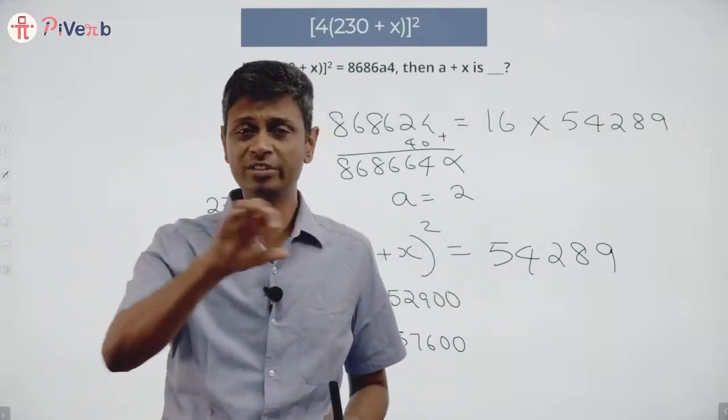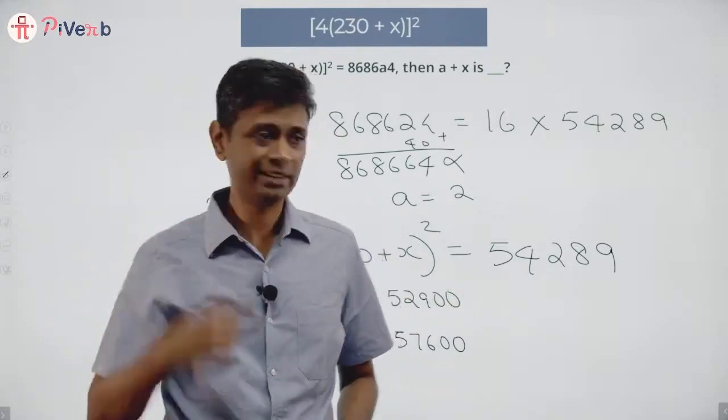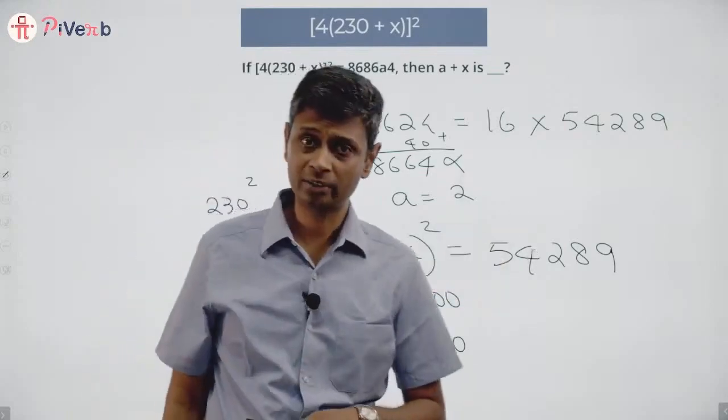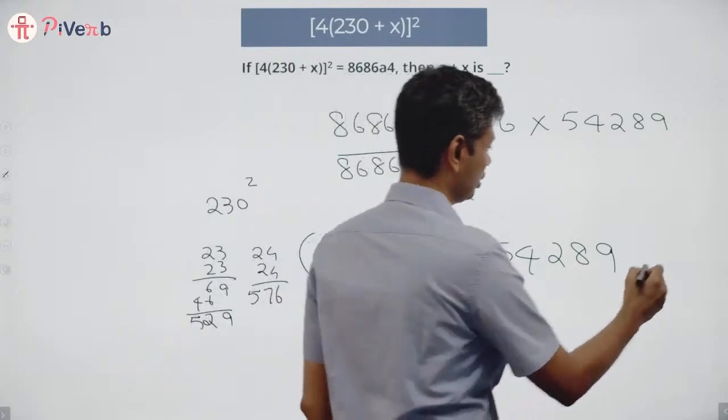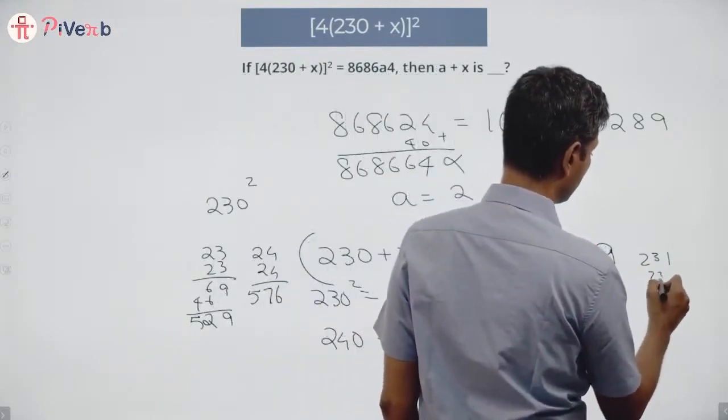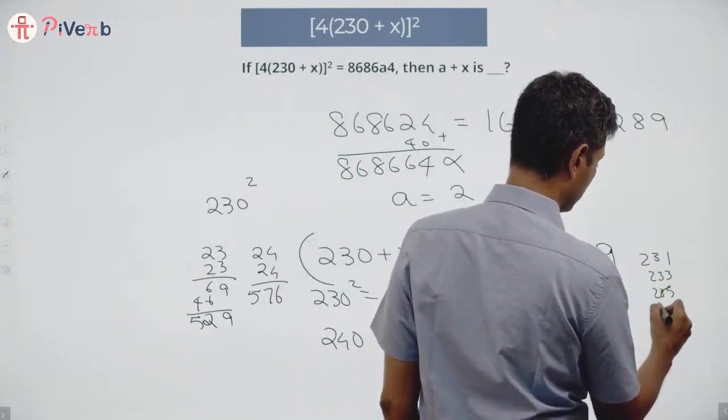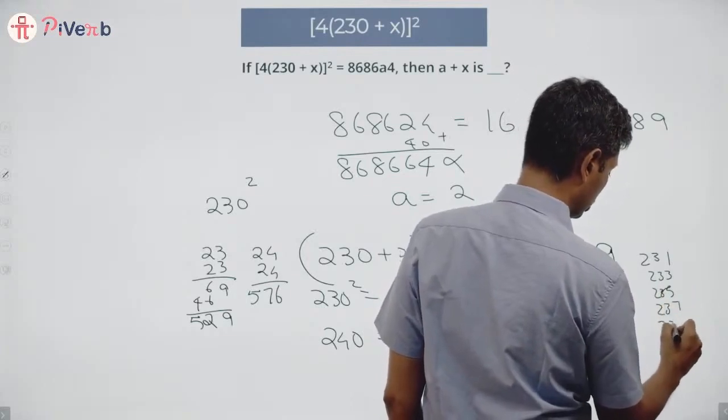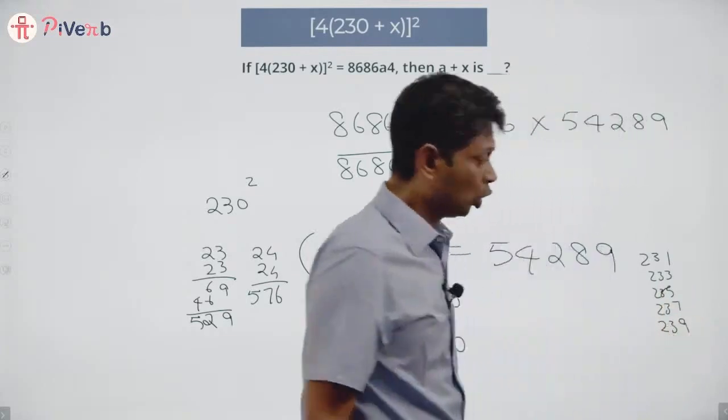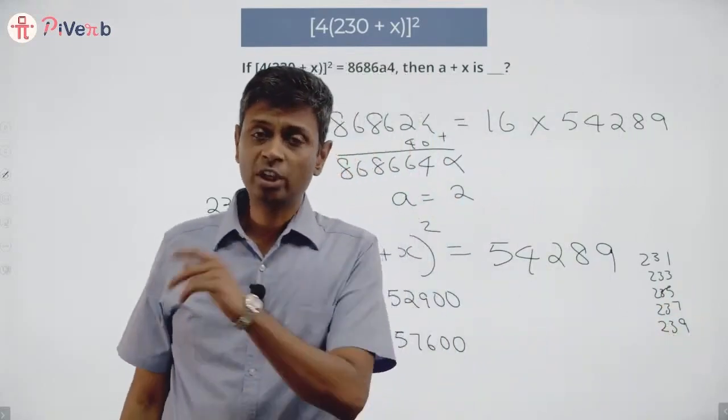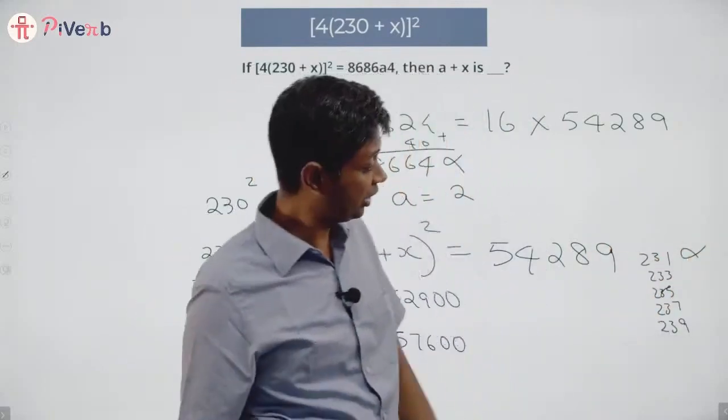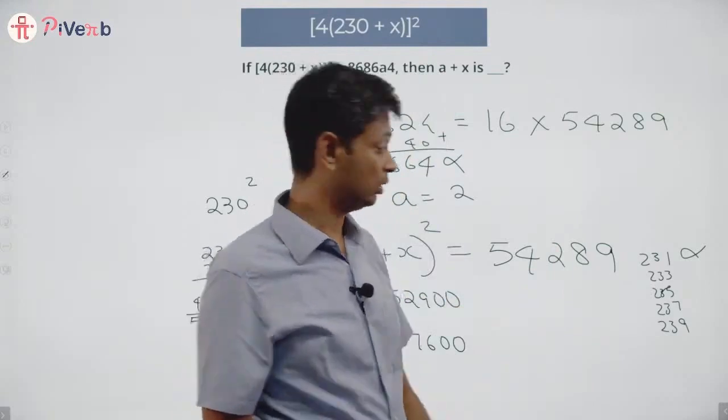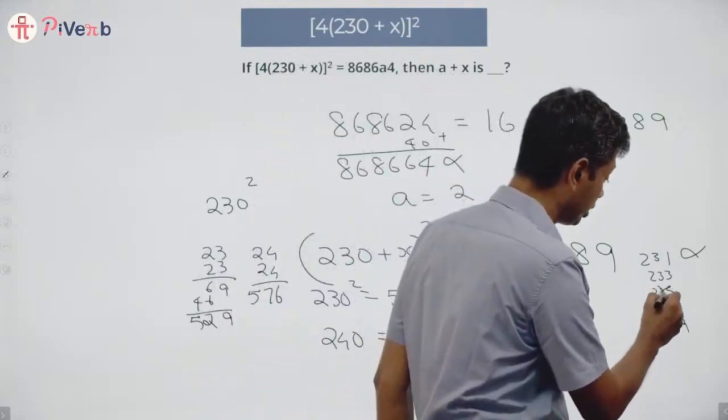So my answer is 231, 233, 235, 237, or 239. 231 times 231 will end in a 1, this ends in 9. 233 times 233, that's possible. 235 times 235 will end in a 5. So our answer, this number is either 233 or 237.